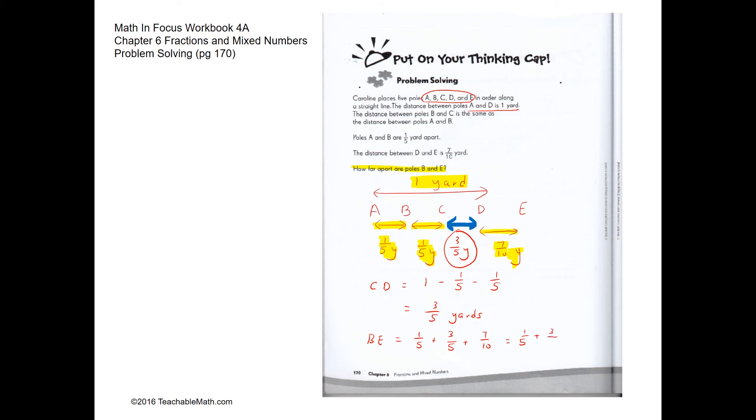First if they change to the same denominator, so it would be 2 tenths plus 6 tenths plus 7 tenths, which is 15 tenths, which is 1 and a half yards.